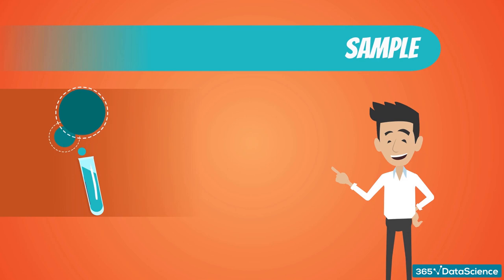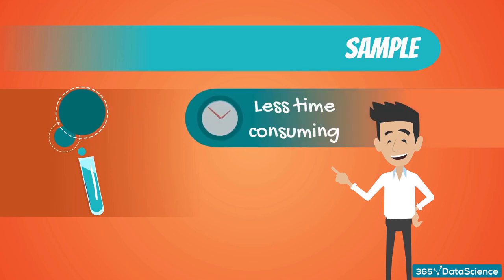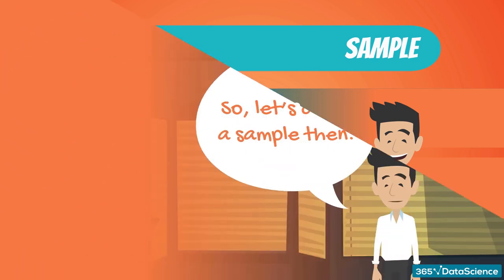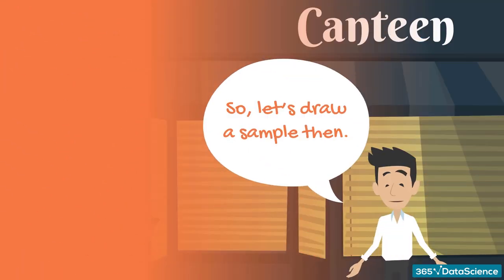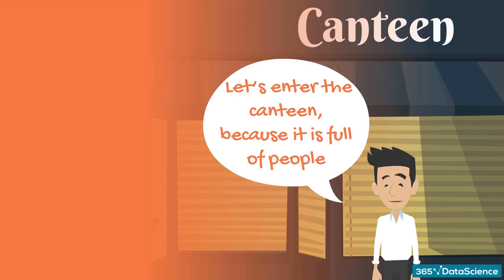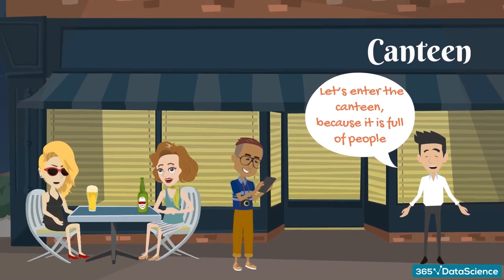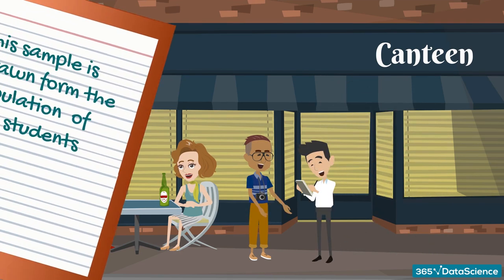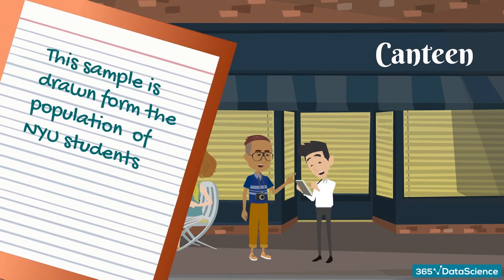A sample, however, is much easier to gather. It is less time-consuming and less costly. Time and resources are the main reasons we prefer drawing samples compared to analyzing an entire population. So, let's draw a sample. As we first wanted to do, we can just go to the NYU campus. Let's enter the canteen, because we know it will be full of people. We can then interview 50 of them. This is a sample drawn from the population of NYU students.